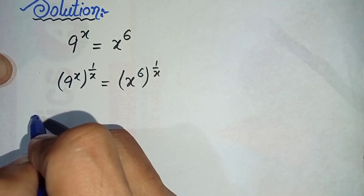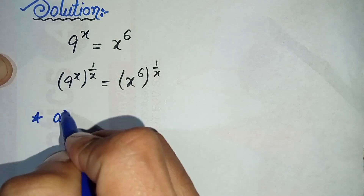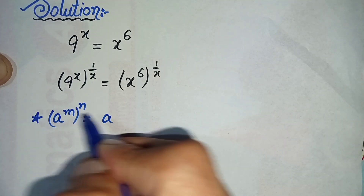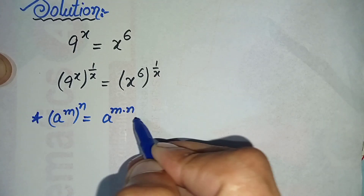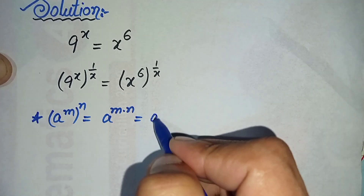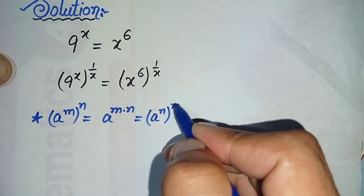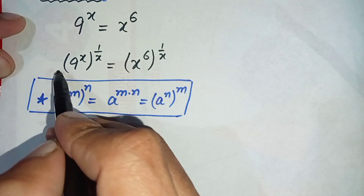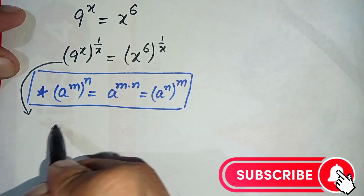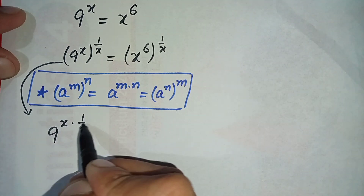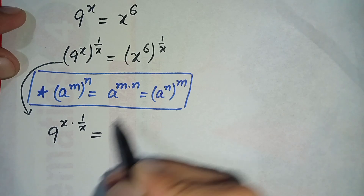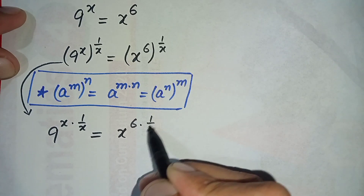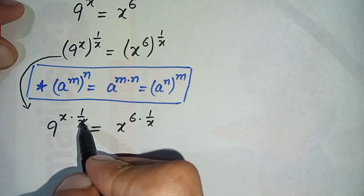In the next step we will use the famous exponential property: a raised to power m, whole raised to power n, is equal to a raised to power m times n, which can also be written as a raised to power n whole raised to power m — we just interchange the powers. By using this exponential property, 9 raised to power x times 1 over x is equal to x raised to power 6 times 1 over x.